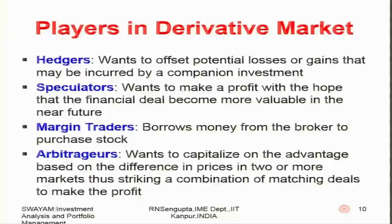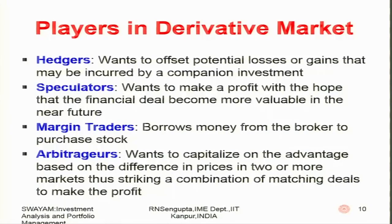There are basically four players in the derivative market, each with their own specific motivations. The hedger wants to offset potential losses or gains that may be incurred by a companion investment — if the price is increasing or decreasing, that may result in a loss or a gain. The hedger wants to lock in at a value such that he or she does not incur a huge amount of profit or loss — playing in a so-called safe zone where there is some profit but not too much loss and not too much profit.